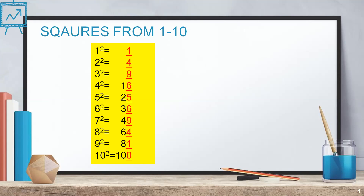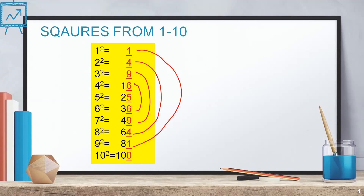Now when you observe these squares closely, let's look at the numbers coming in the ones place. 1² = 1 and 9² = 81 — both ending with 1. The squares of 2 and 8 are ending with 4. Squares of 3 and 7 are ending with 9. Squares of 4 and 6 are ending with 6. And the square of 5 is ending with 5.